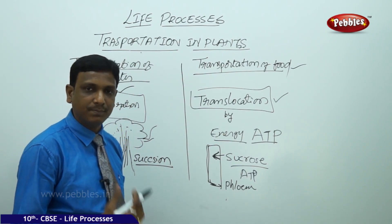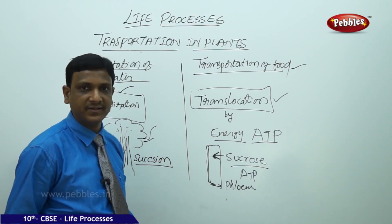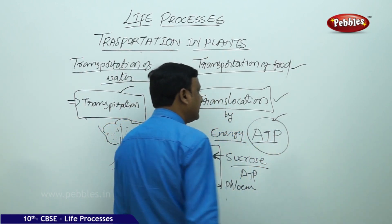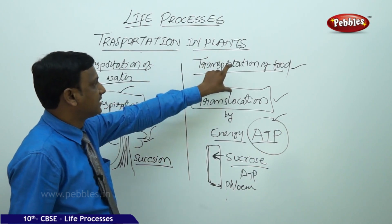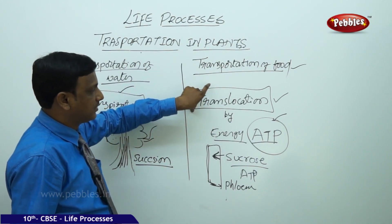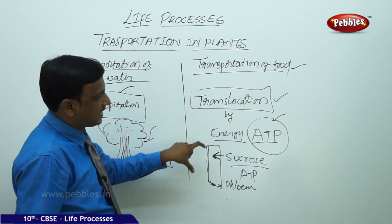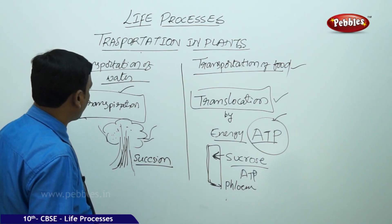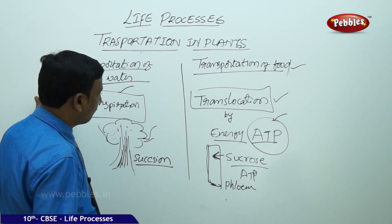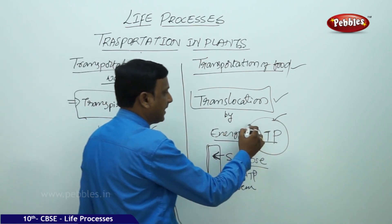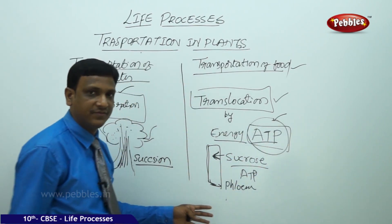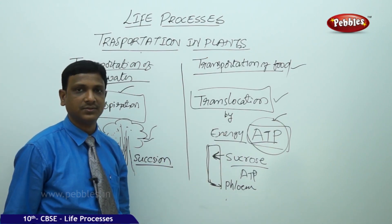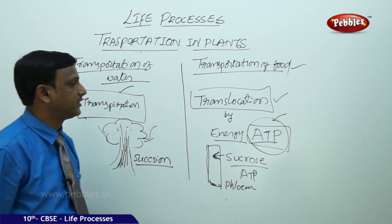This osmotic pressure makes the food materials move in the tissue. For this creation of osmotic pressure, energy is spent in the form of ATP. This energy-used process of food transport — translocation — is not as simple as the transportation of water, which involves only physical forces. In this way, food and water are transported in plants.